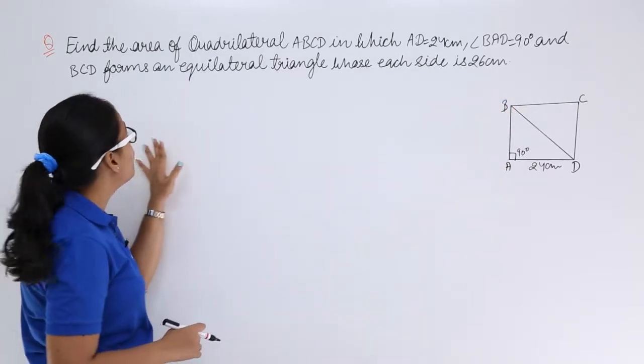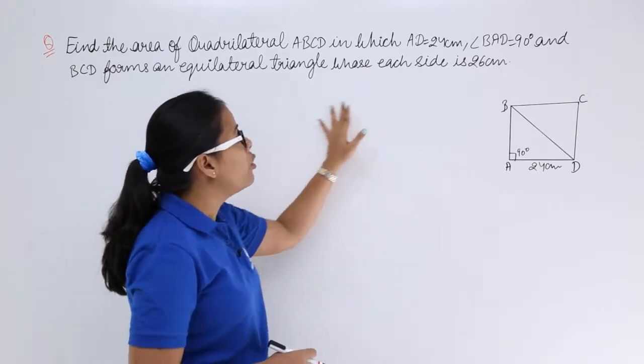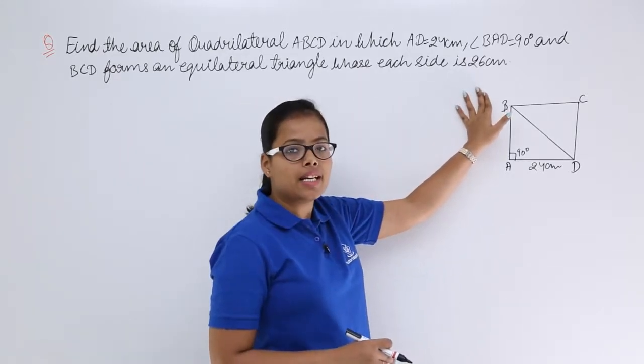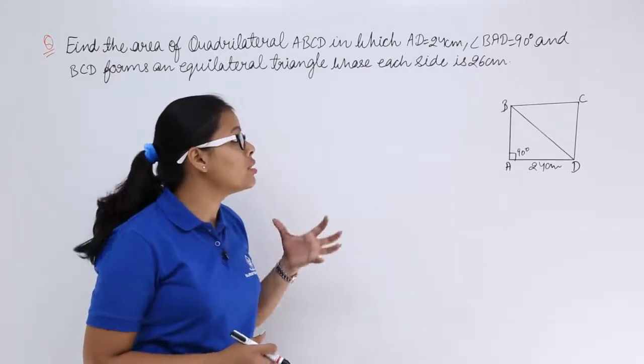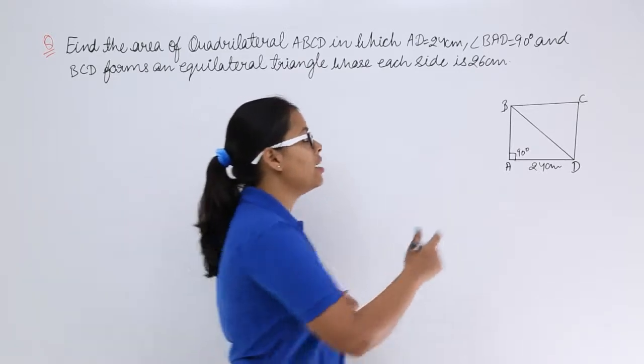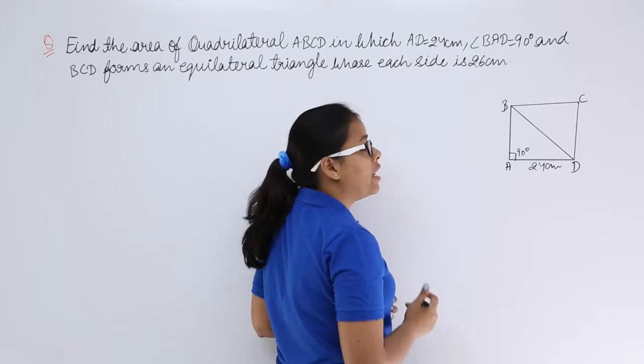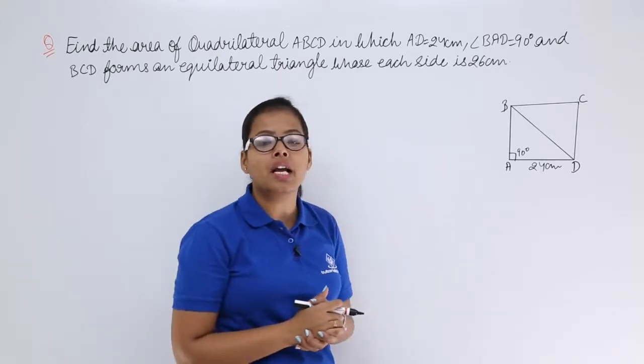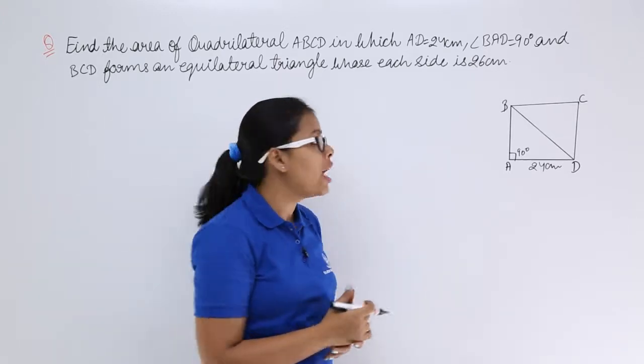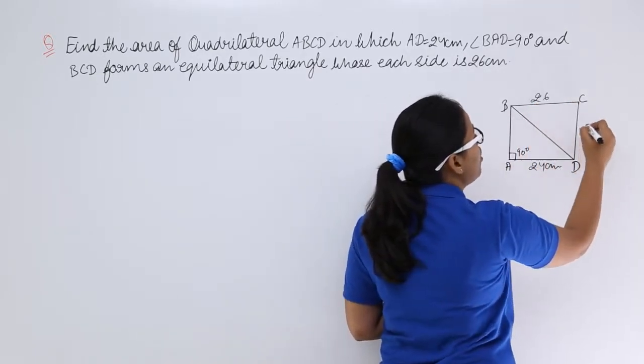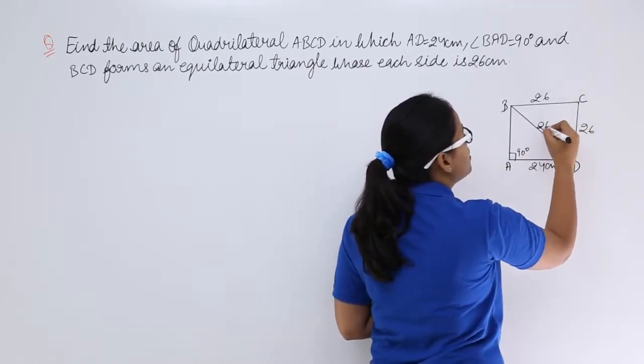and BCD forms an equilateral triangle whose each side is 26 cm. Now what this problem is trying to say here is that this triangle BCD is an equilateral triangle and you know that in an equilateral triangle all sides are equal which is equal to 26, which means all these sides are 26.